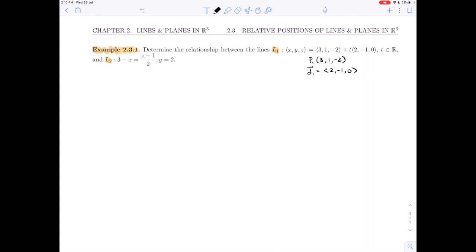L2 is going to require a little bit more work since it's in symmetric form. So we remember that those equations are all equal to t. So 3 minus x is equal to t. That tells us that x is 3 minus t. Y is equal to 2. Well, that's just given.